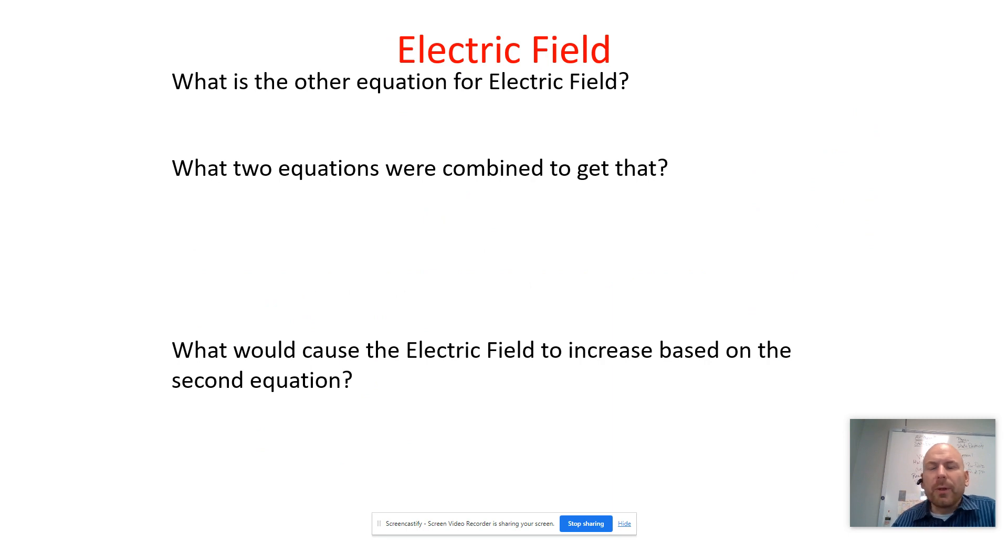So the other equation for electric field is: electric field is equal to this constant, 8.99 times 10 to the positive ninth, Coulomb's constant, multiplied by the charge of the source charge over the distance of separation squared, or how far it is away from the source charge squared.